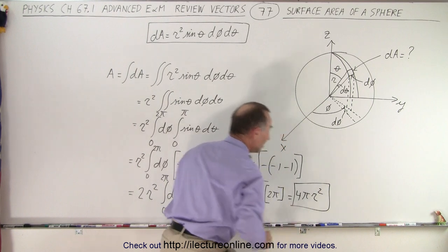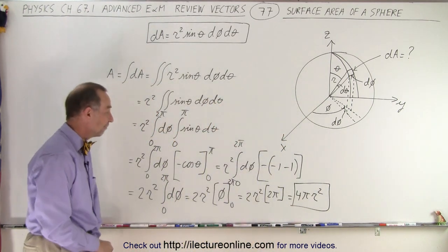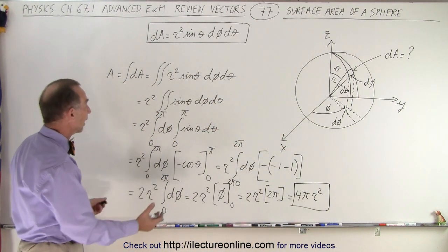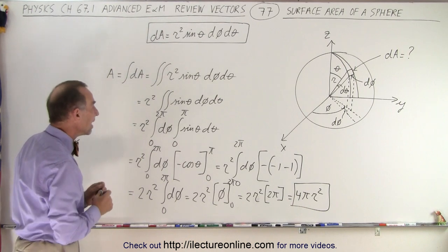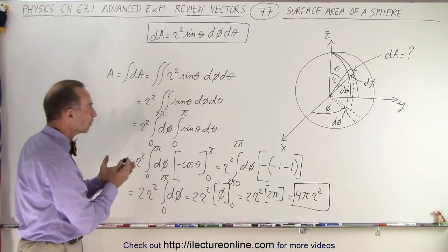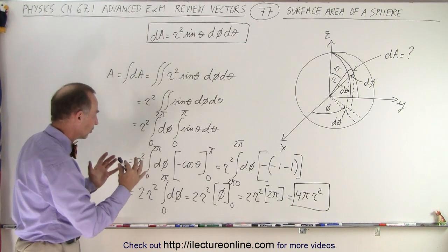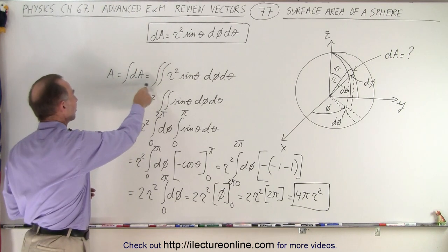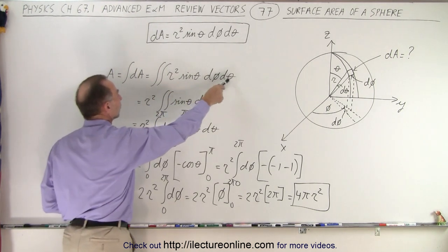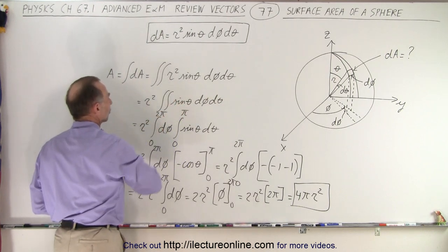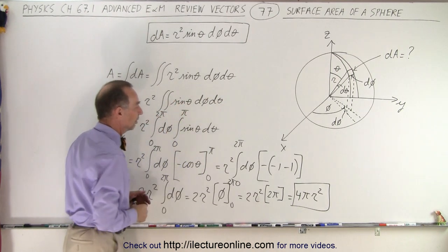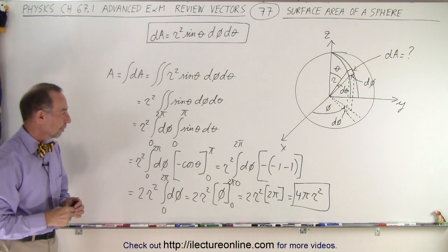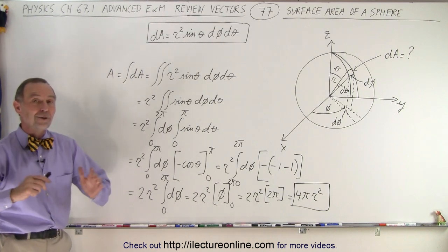And that is indeed the surface area of a sphere. So that's how we apply the definition of dA, a surface element on a sphere in spherical coordinates. Then we realize that dA is simply a double integral over theta and phi. R becomes constant so it goes outside, and then the rest, you just follow the methodology. And that is how it's done.